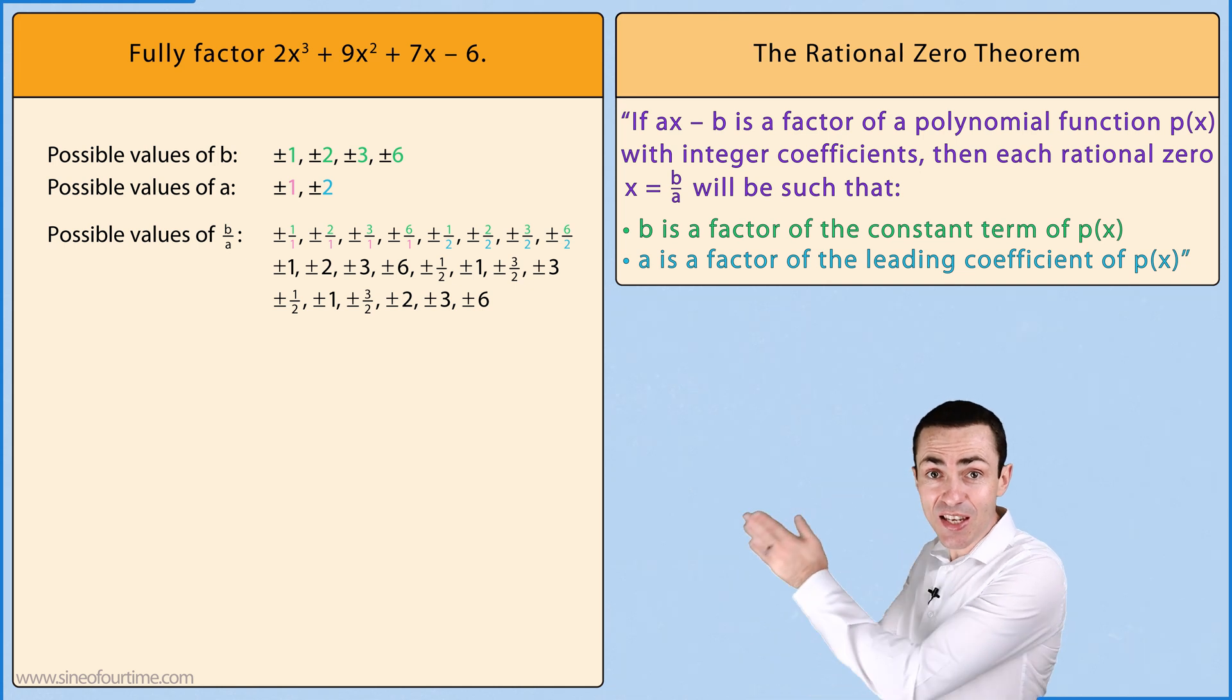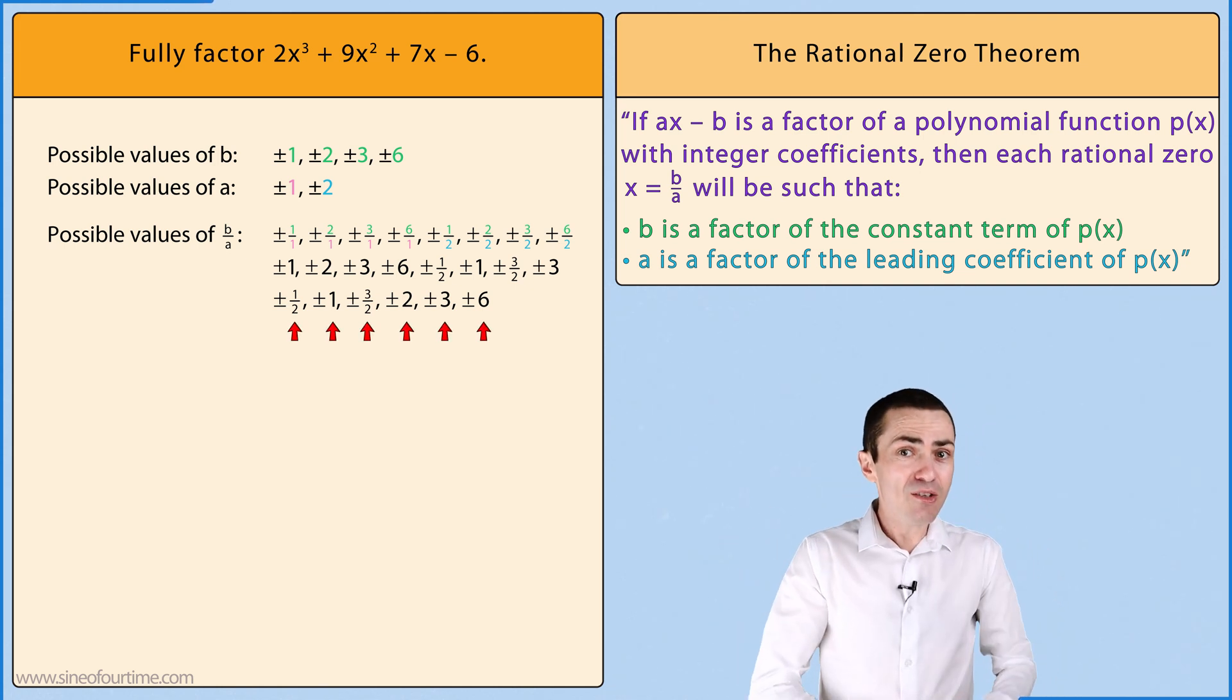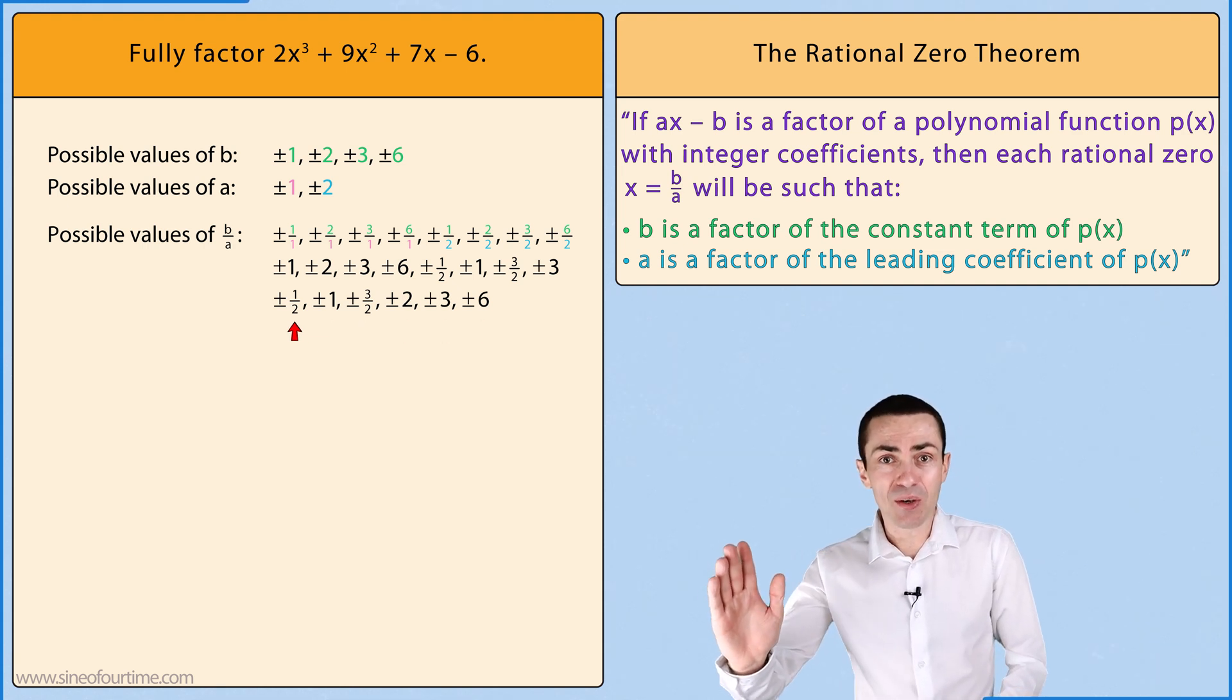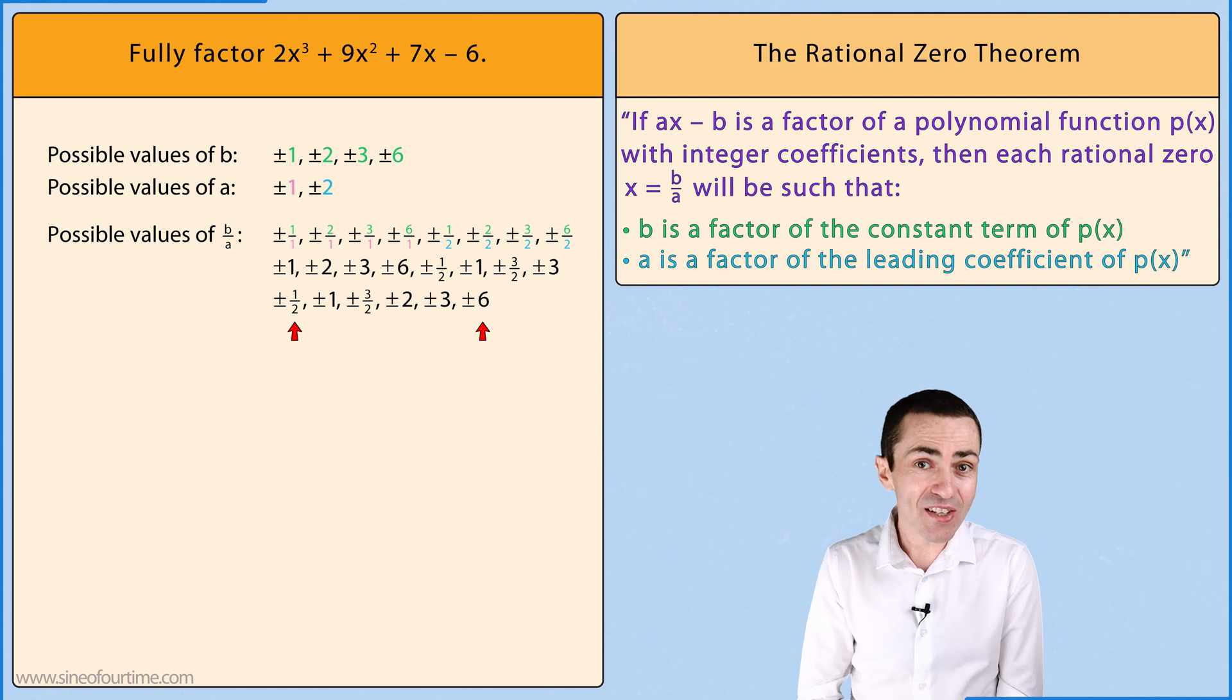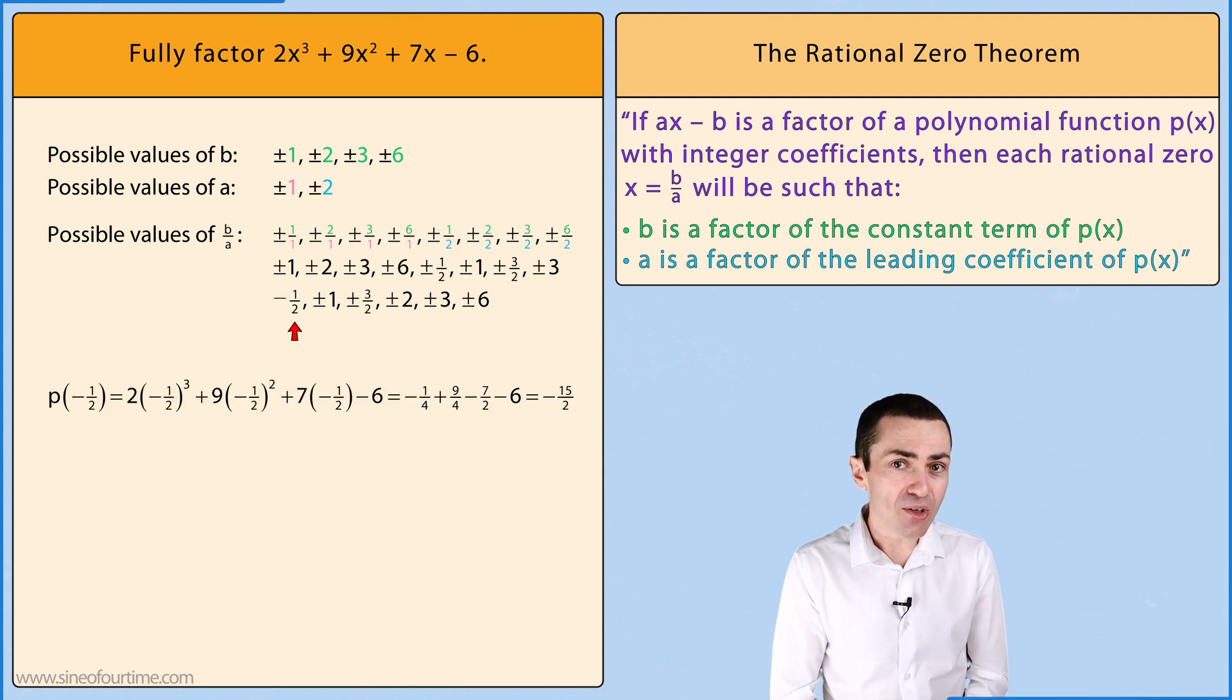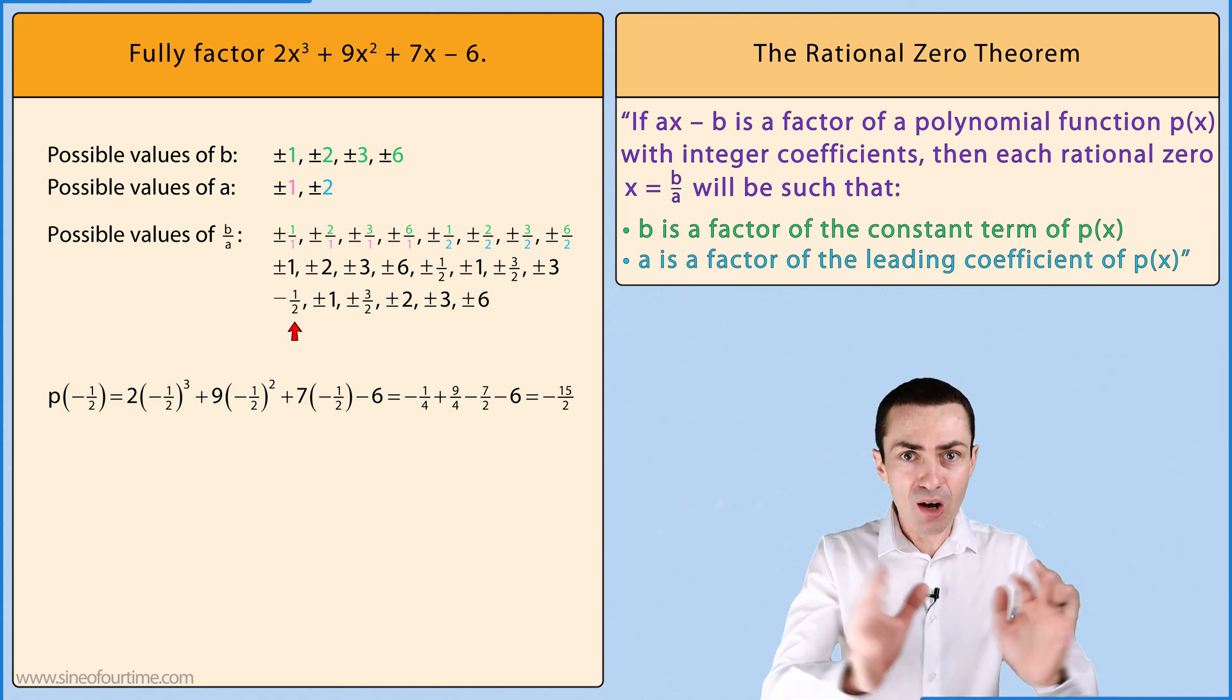Now we can start by testing these possible values of b/a using the factor theorem to see which ones make the polynomial function equal zero. My advice is always to start testing from the lowest number and then working our way up to the highest number. Let's start by testing -1/2 which gives us a value of -15/2 which tells us that -1/2 is not a rational zero of this polynomial.